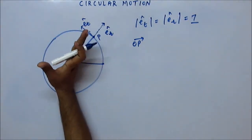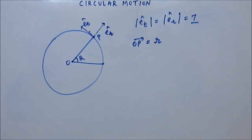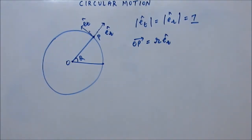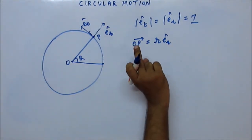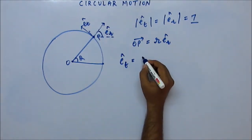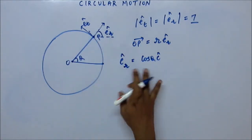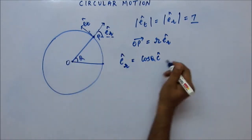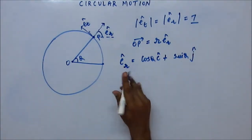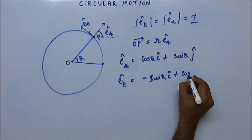As P goes round and round, the OP vector also rotates. The position is represented as OP vector, and OP equals R — the length of the radius — in the radially outward direction er-hat. Now, er-hat can be broken as cos θ î + sin θ ĵ, since the magnitude of er is 1. And et-hat can be broken as −sin θ î + cos θ ĵ. Use simple trigonometry: find the angle et makes with horizontal/vertical and break it into components.